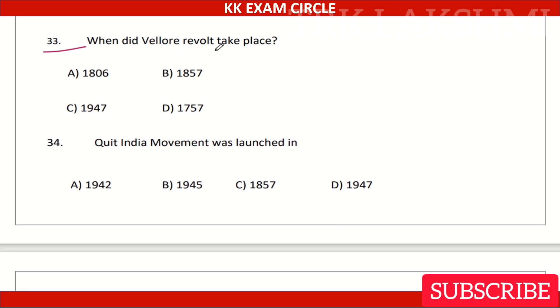Question 3. When did the Vellore Revolt take place? Option A: 1806. Option B: 1857. Option C: 1947. Option D: 1757.